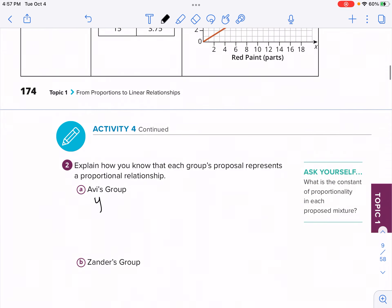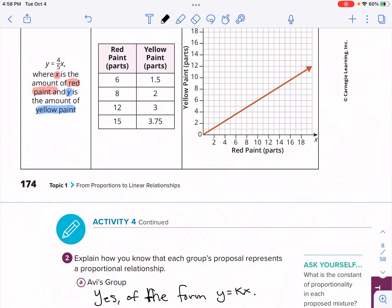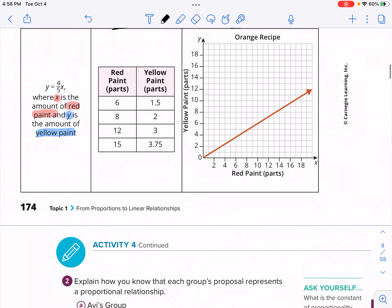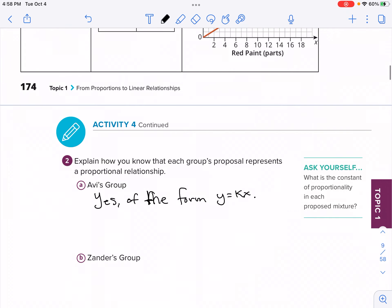We'd be going back and forth here, but let's start with Avi. So Avi's group. So number two says, explain how you know that each group's proposal represents a proportional relationship. So for Avi's group here, it is an equation of the form Y equal to KX, but we have Y equal to 4/5 X. Where we have, let's highlight here where X is the amount of red paint and we'll put this in blue. Y is the amount of yellow paint. So Avi's group is yes. Similar because it's of the form Y equal to KX. Now, since the constant proportionality is a fraction, it's 4/5. Now, what part of it is red? What part of it is yellow?